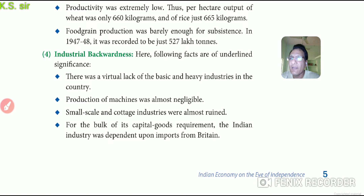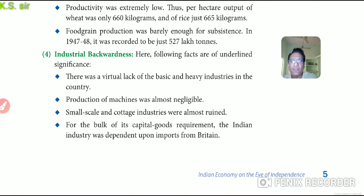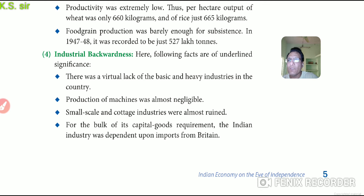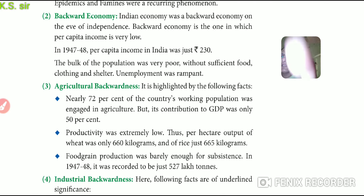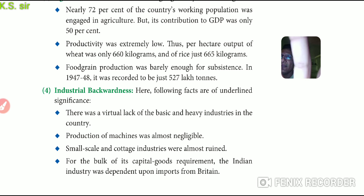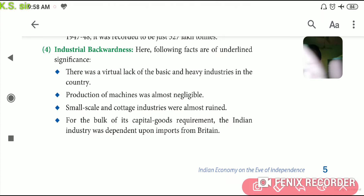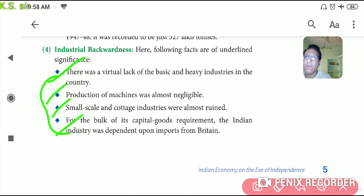The fourth feature was industrial backwardness. There was a virtual lack of basic and heavy industries in the country. Production of machines was almost non-existent. Small-scale and cottage industries were almost entirely ruined. For the bulk of its capital goods requirements — machinery and equipment — the Indian industry was completely dependent on imports from Britain. These four points highlight India's industrial backwardness.